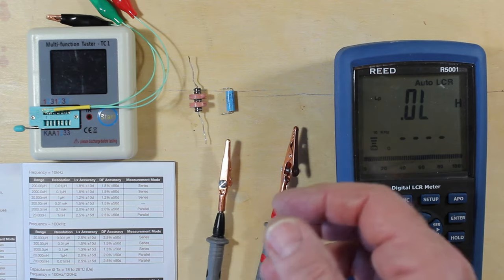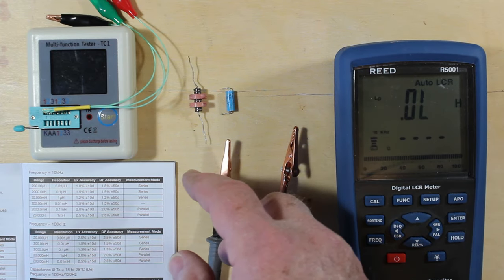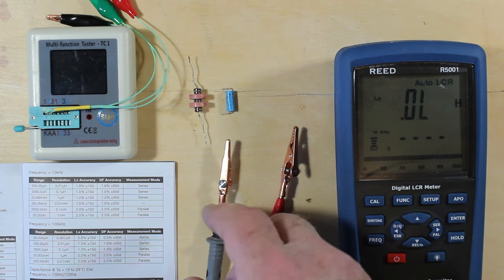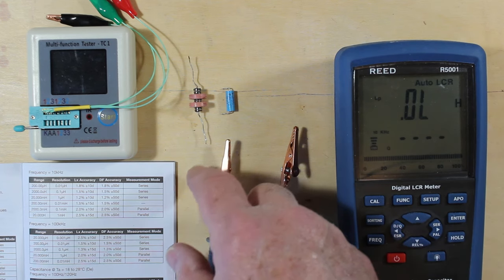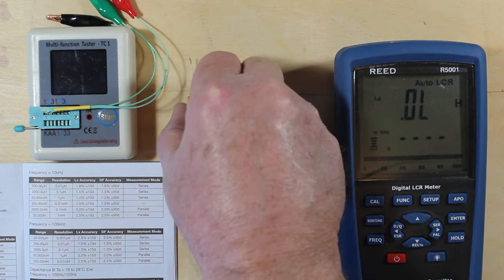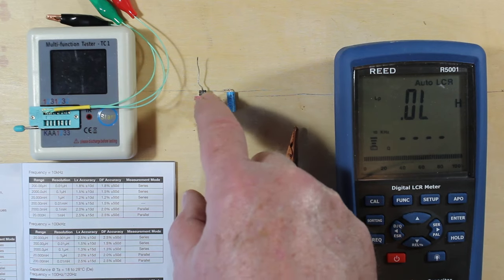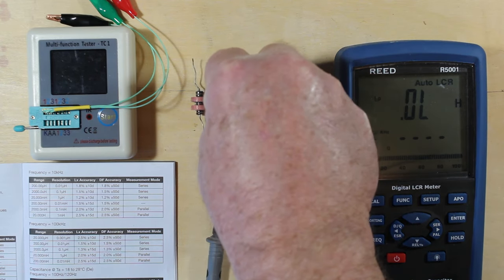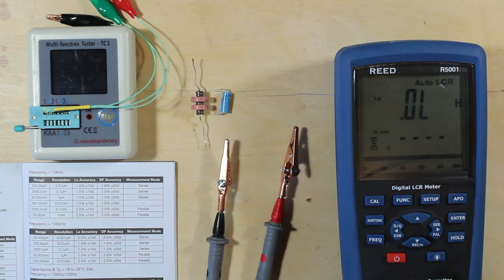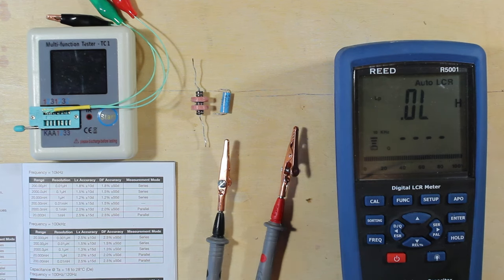I then did a different method, the ringing method, using the square wave from the oscilloscope probe output compensation square wave. I would ding the parallel combination here and see what it would resonate at, and again came up with 2.56 millihenries.